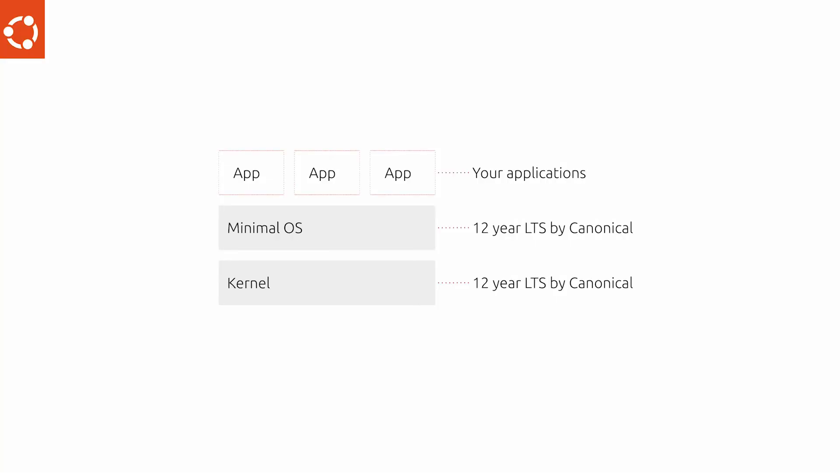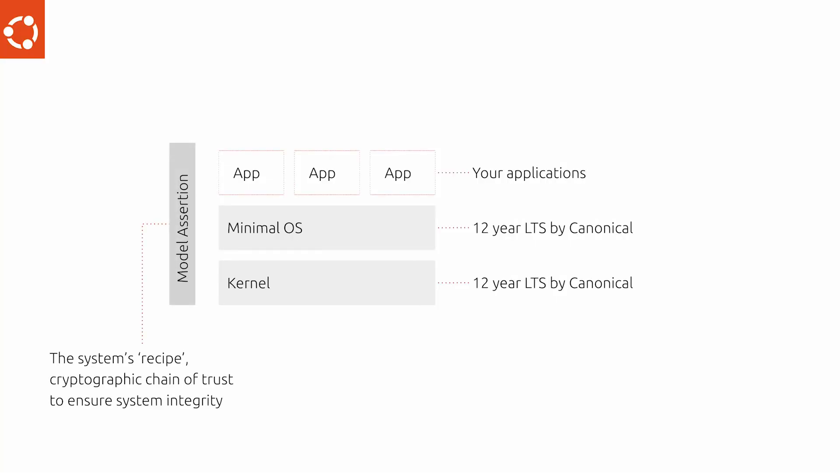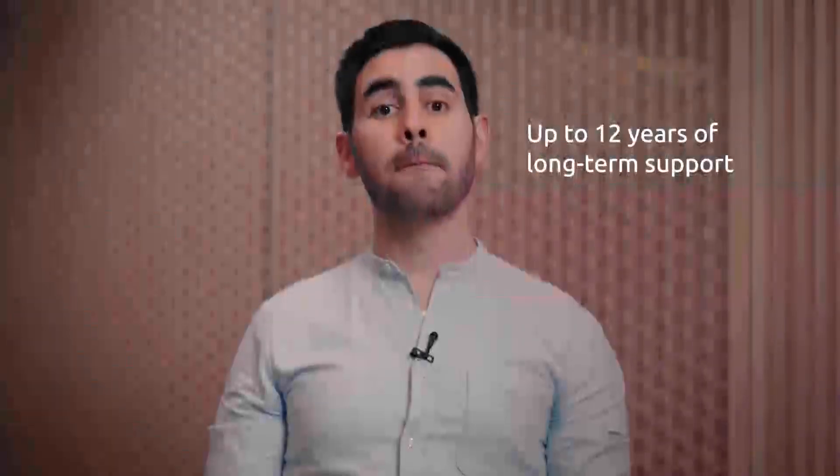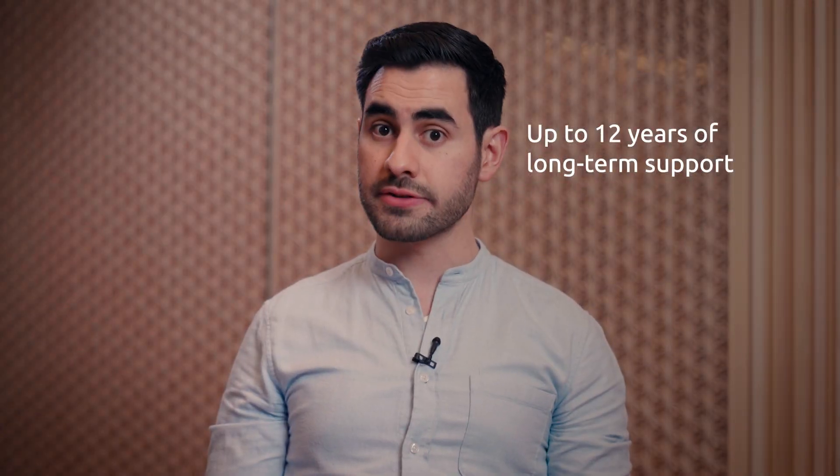To build your Ubuntu Core image with your target applications and hardware, you just need to complete a model assertion — a declarative JSON file. This file is the recipe for your production image, specifying the application, kernel, base OS, and other necessary components that make your standalone image. Ubuntu Core comes with Canonical's 12-year LTS commitment, matching the lifetime of your device.